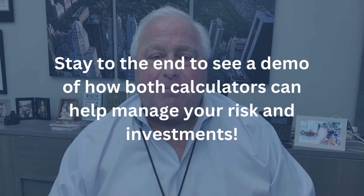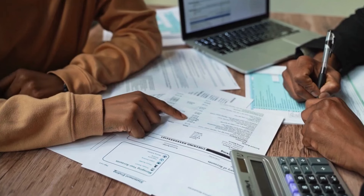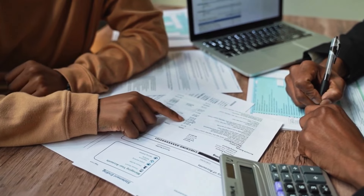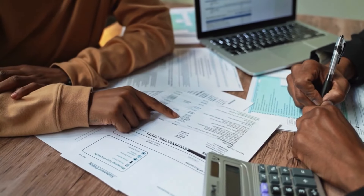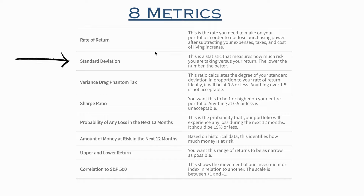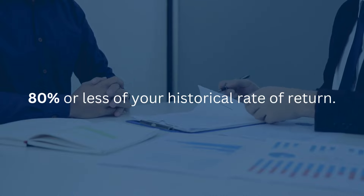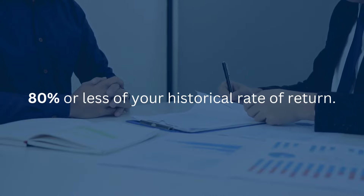So I came up with these eight metrics. First, you want to look at the rate of return that you need to make in order to not lose purchasing power after subtracting your expenses, taxes, and cost of living increase. Then the term standard deviation — kind of a wonky term, but it's the most important statistic when it comes to asset management. Your standard deviation needs to be 80% or less than your historical rate of return.